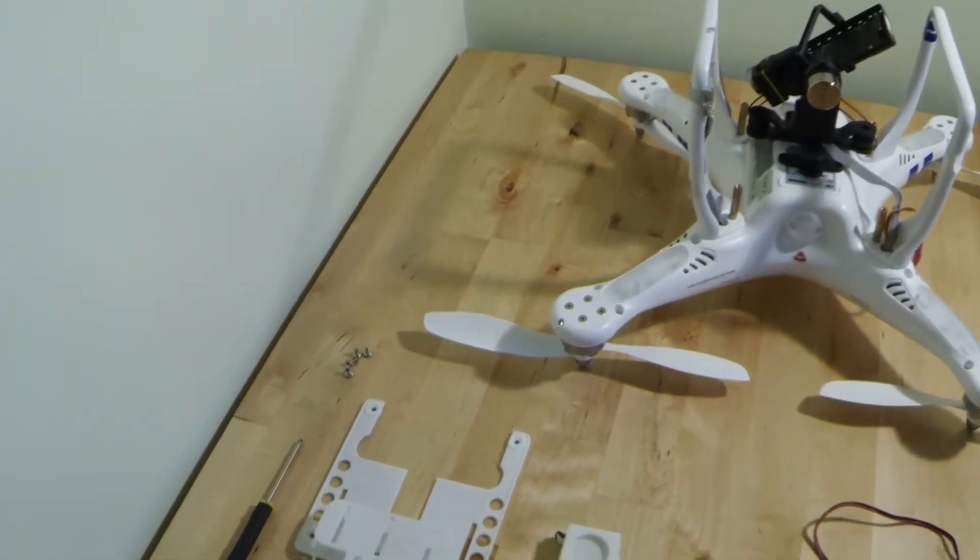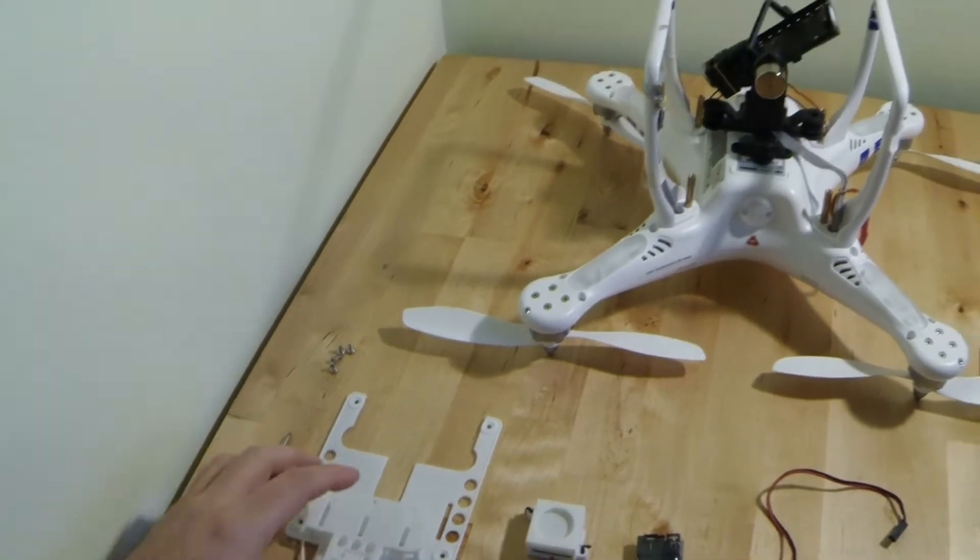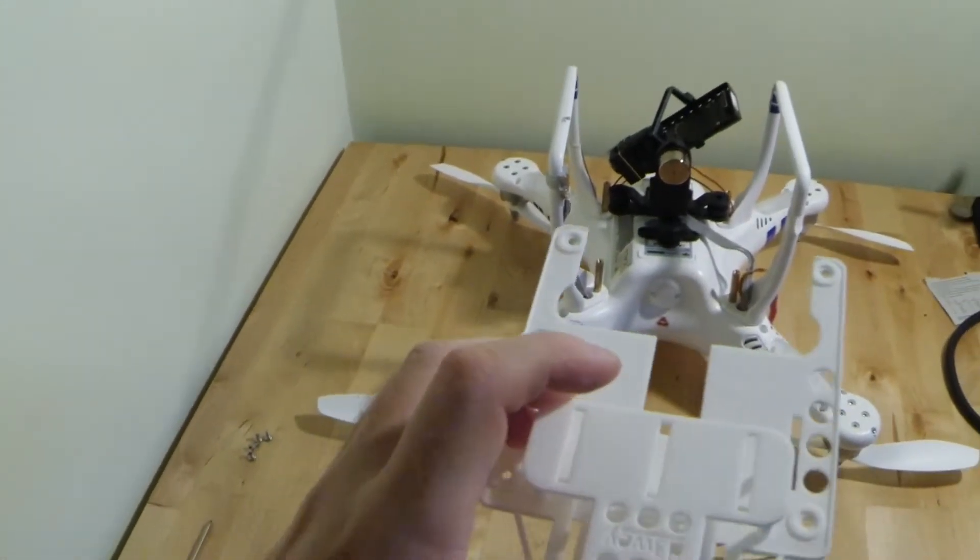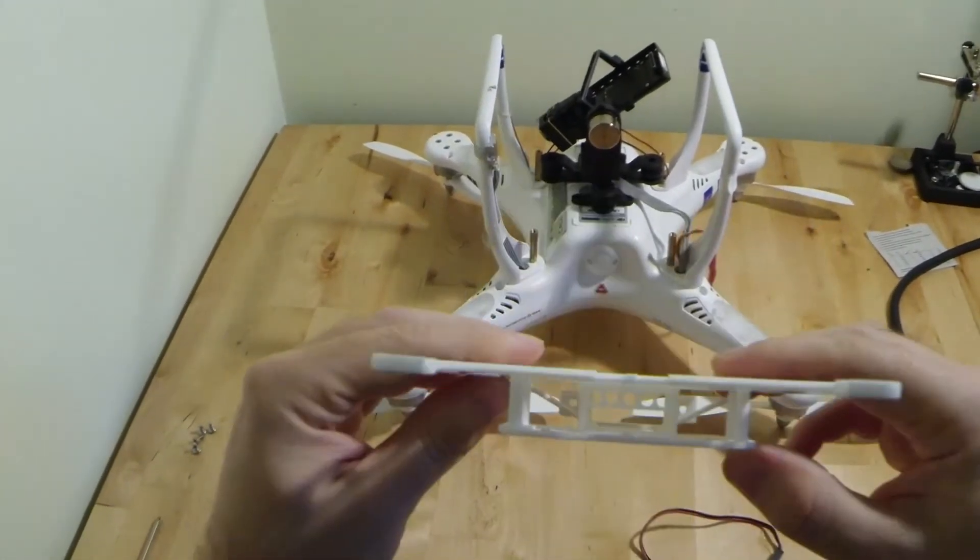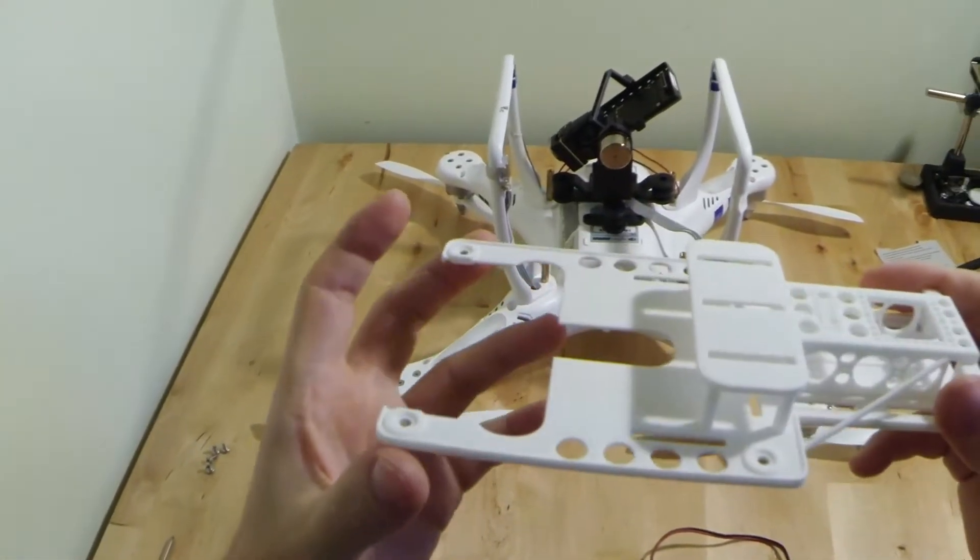Hi guys, so quick demonstration on how to fit the new Zenmousse ready FPV under tray. Here it is here, very similar to the normal under tray.